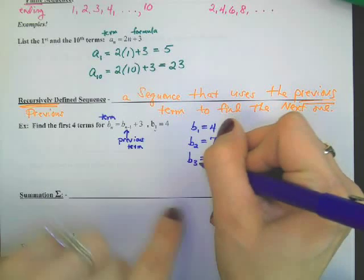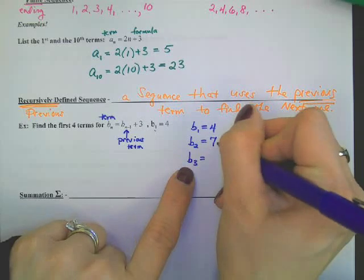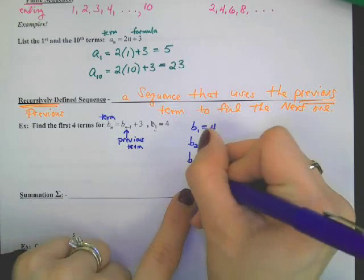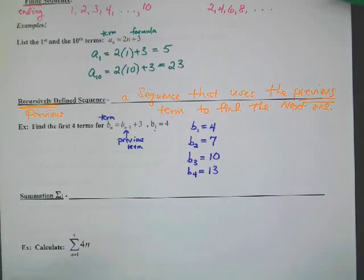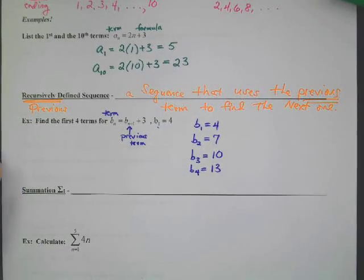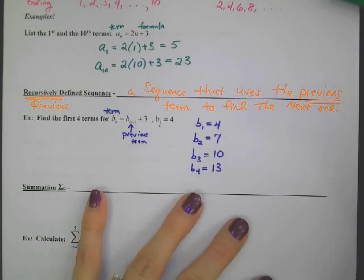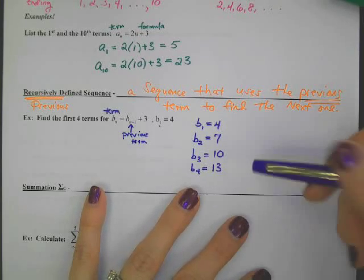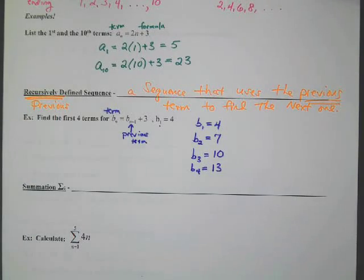B sub 3: to find the third term, take the previous one — take 7 and add 3. B sub 4: take 10 and add 3 to make 13. The directions say just add 3. But what's the 100th term? To find the 100th, you'd need the 99th, and to find that, you'd need the 98th. You can see why recursive is not going to be used a whole lot — it's not very powerful.